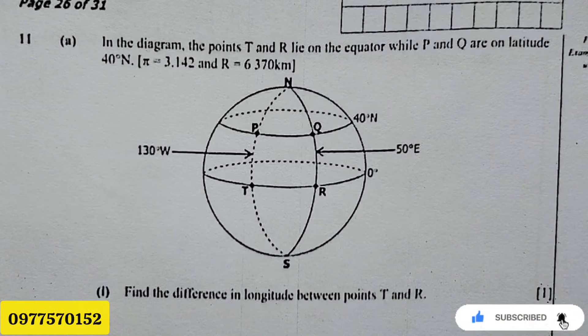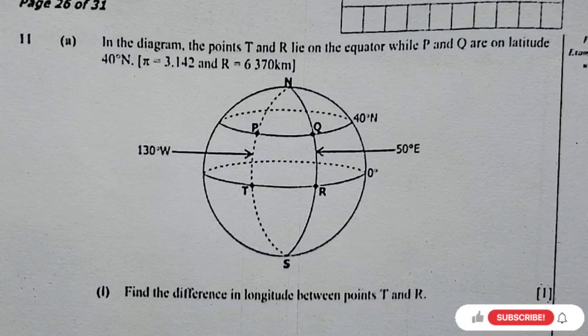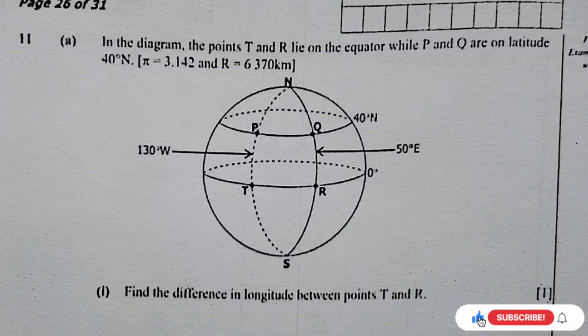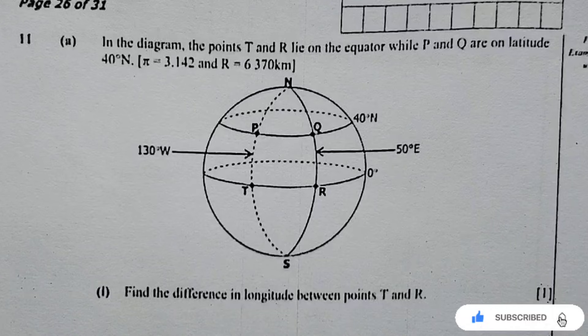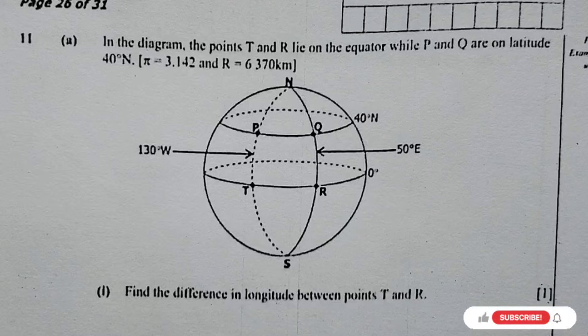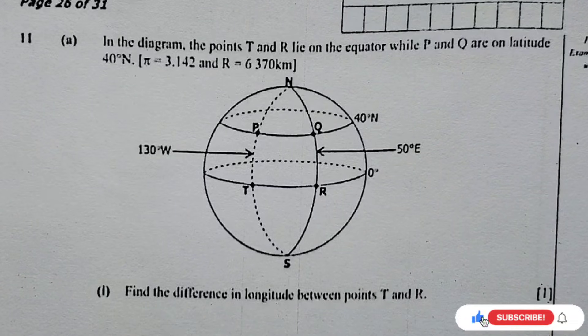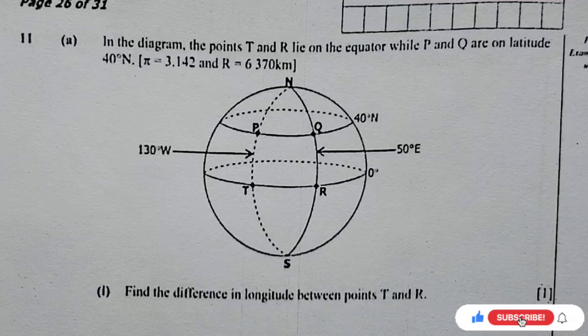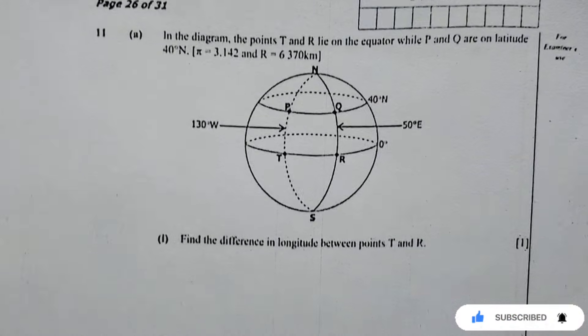Without wasting much time, this is question 11a. In the diagram, the points T and R lie on the equator while P and Q are on latitude 40 degrees north. Take pi to be 3.142 and the radius of the earth 6370 kilometers.